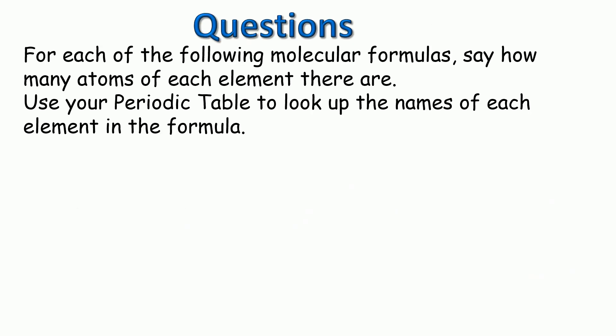Here's some questions for you to try. The question is, for each of the following molecular formulas, say how many atoms of each element there are. Use your periodic table to look up the names of each element in the formula. The first one is CuSO4, so there's three elements in that, as we can see there's three capital letters. NH3, so there's two elements in there to be looking for, and Na2O, so Na is one element and O is another. So pause the video, have a go on a scrap of paper, and then mark your answers.